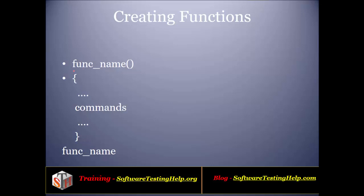To create a function, first we need to give the function name: func_name with open and close braces, and then you can put all the statements inside. This is your function definition — it contains the function name, open bracket, close bracket, and the logic of the code. Then you need to call that function by giving the function name. A function is a series of statements, a block of code which performs a certain task or work.